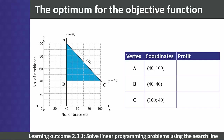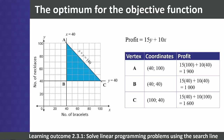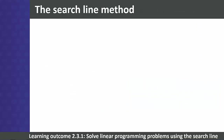Our objective function is profit equals 15y plus 10x. Point A has coordinates (40, 100), which gives a profit of 1900 rand. Point B has coordinates (40, 40), which gives a profit of 1600 rand. So our maximum profit is at A — to maximize profit, the optimal solution is 40 bracelets and 100 necklaces.